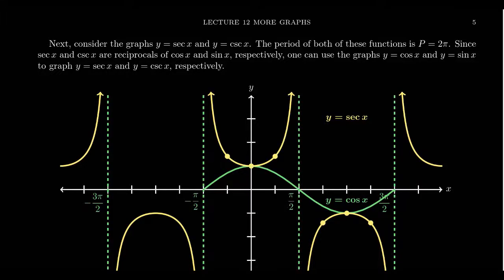In this video, I want to talk about the graphs of secant and cosecant. In previous videos, we talked extensively about the graphs of sine and cosine, as well as tangent and cotangent. It turns out because secant and cosecant are the reciprocals of cosine and sine, our knowledge of graphing sine and cosine will help us graph secant and cosecant. Graphing secant and cosecant is a lot easier than graphing tangent and cotangent because we are more familiar with graphing sine and cosine.